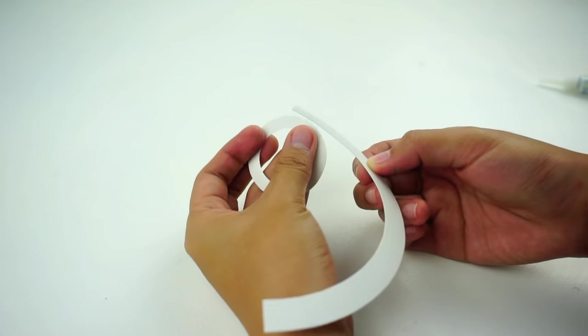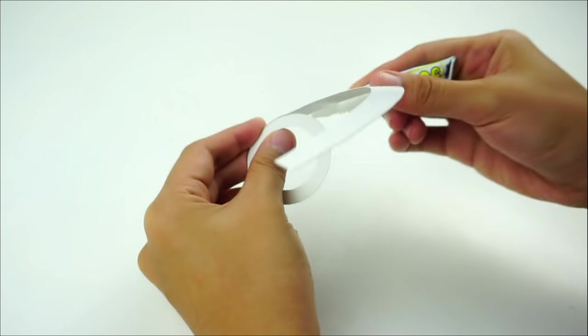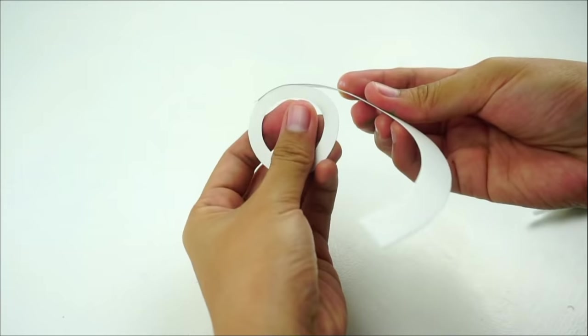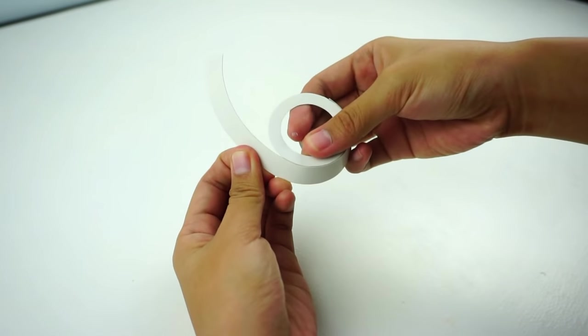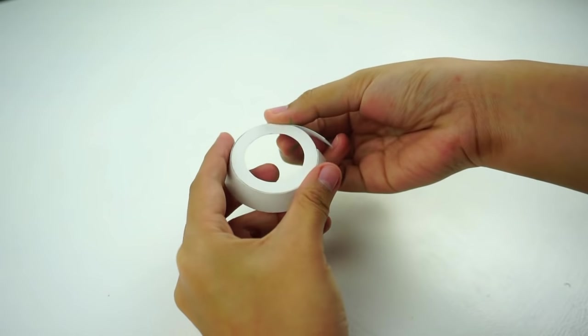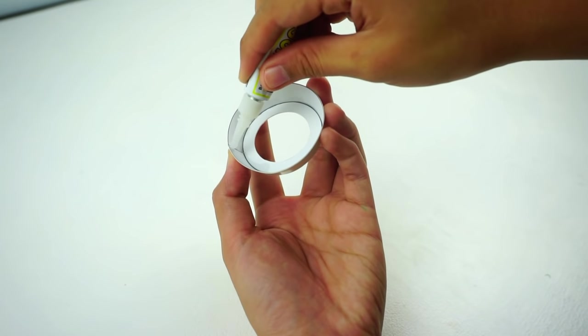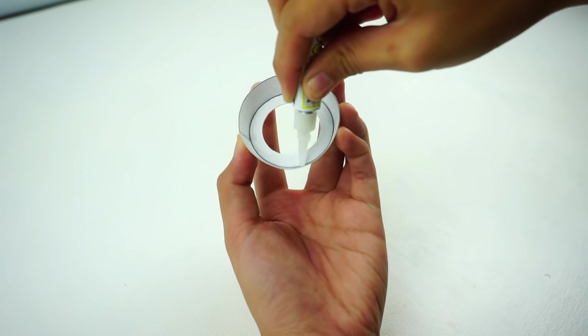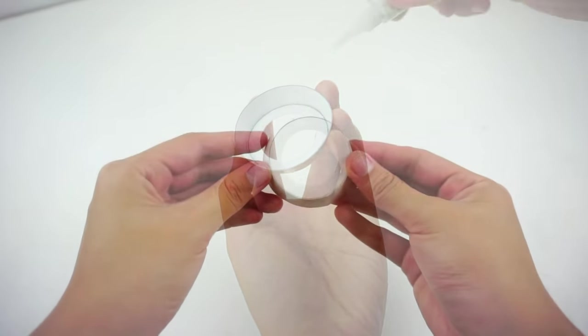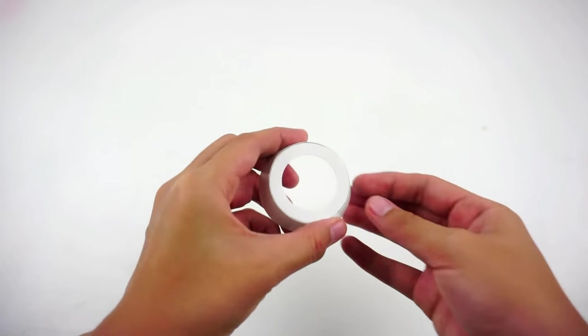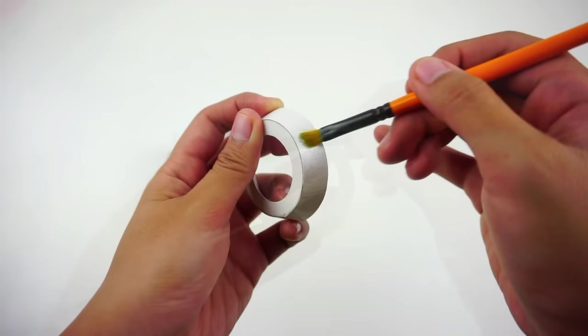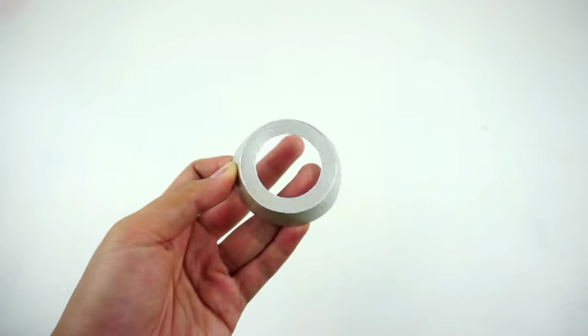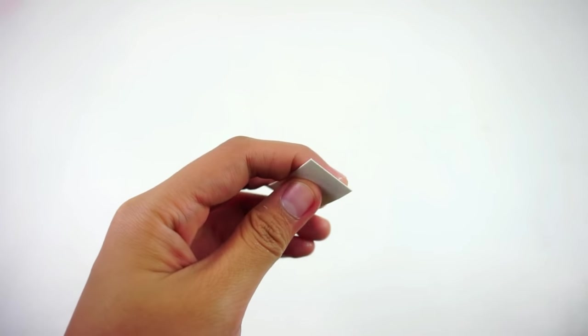Stick these pieces together like so and paint with silver. Take this piece and glue the ends together like so to make a ring.